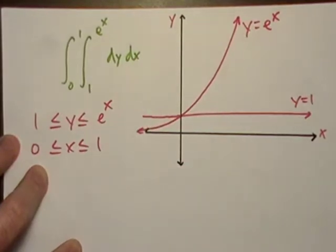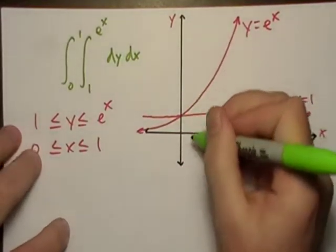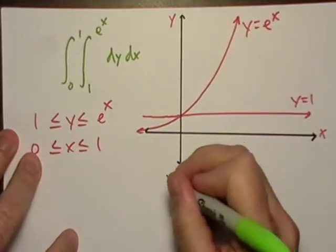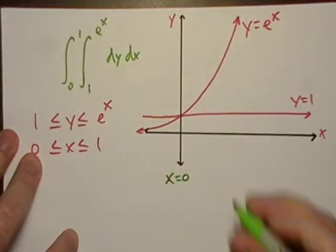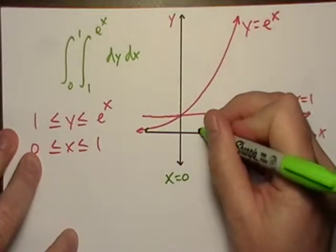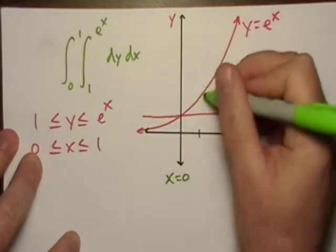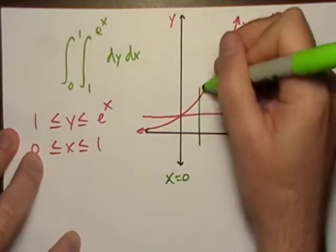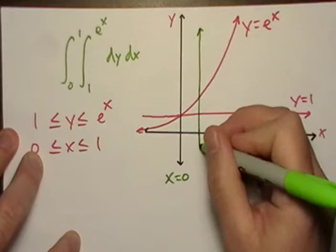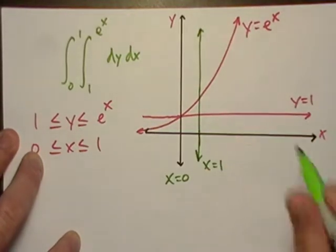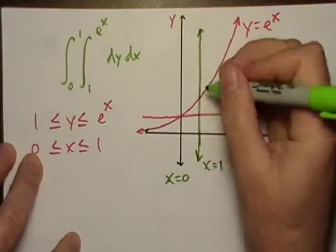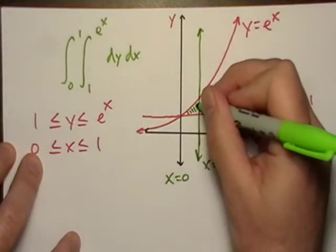And let's see here. In the x direction, it looks like this thing exists between x equals 0, that's just the y-axis, no problem there, and let's just call that x equals 1 right here. Okay, x equals 1.